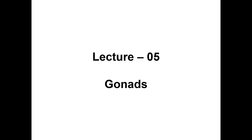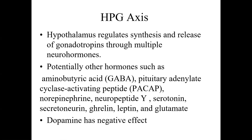Today we will talk about the gonads and their endocrine control in fishes. The axis which regulates gonadal development and its endocrine control is called the hypothalamic-pituitary-gonadal axis. The hypothalamus plays a major role and regulates the synthesis and release of gonadotropins through multiple neurohormones from the pituitary gland. Other than these gonadotropins, many other hormones are also involved in gonadal development in fish.